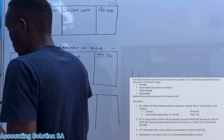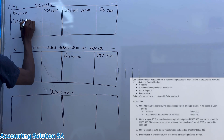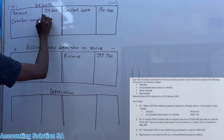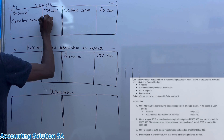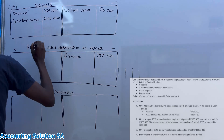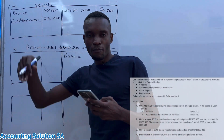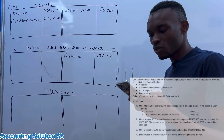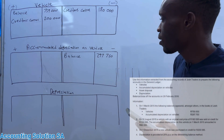A new vehicle was purchased on credit — creditors control — for 200,000. We record it on the debit side because now we have more vehicles. For depreciation, we use 20% per annum on the diminishing balance method. We are going to calculate three depreciation amounts: number one for the sold vehicle, number two for the bought vehicle, and number three for the old vehicle.